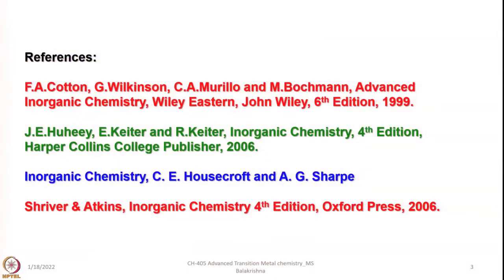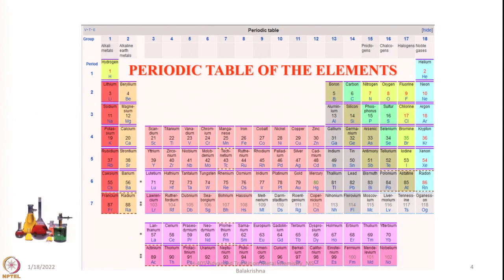The books I have referred to in framing this course are: F. A. Cotton's 6th edition of Advanced Inorganic Chemistry, Huheey Inorganic Chemistry 4th edition, Inorganic Chemistry by C. E. Housecraft and A. G. Sharpe, and also Inorganic Chemistry 4th edition by Shriver and Atkins. This periodic table is very, very important for a chemist. Once we know the periodic trends and the position of each element and how properties vary with the charge-to-size ratio, understanding the chemistry of main group or transition elements becomes much easier.